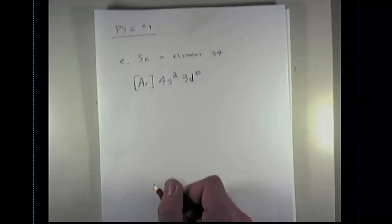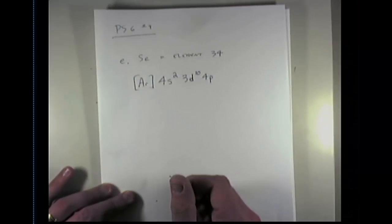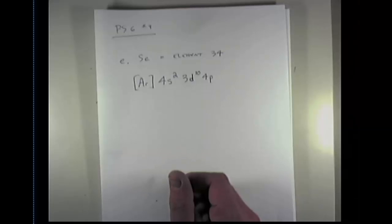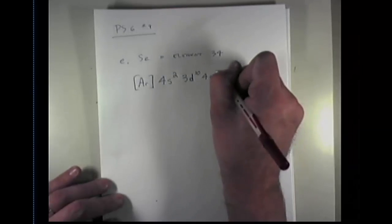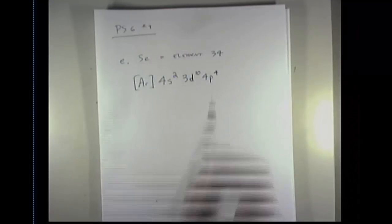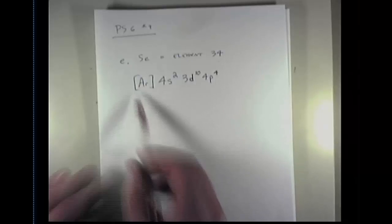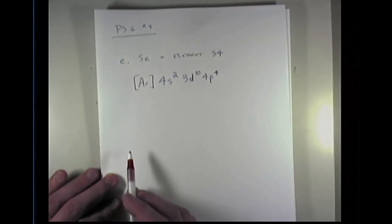I'm now at element 31. Element 31 is gallium, which is the first element in the 4P row. I now count up. 31, 32, 33, and 34. I'm finally at element 34 selenium, which has 4 electrons in the 4P row. So this is the condensed or abbreviated electron configuration for selenium.